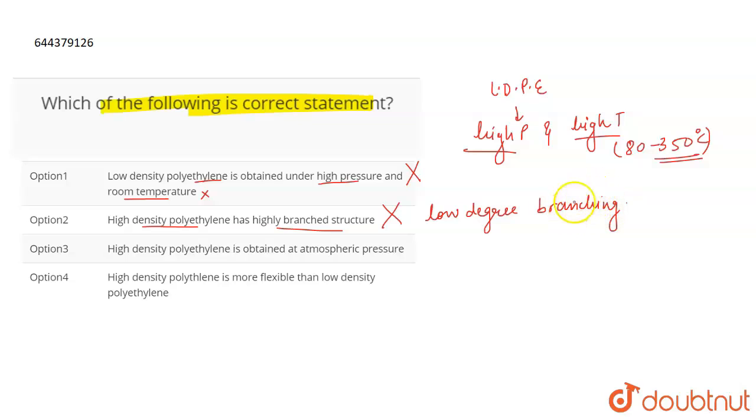Talking about the third statement, high density polyethylene is obtained at atmospheric pressure. That is correct. It does not need very high pressure to be obtained. That is why it can be obtained under atmospheric pressure as well. So this is the correct statement and this is the correct answer.